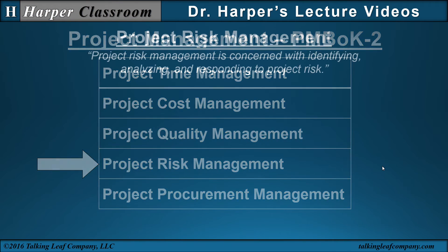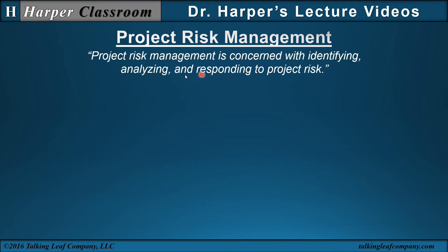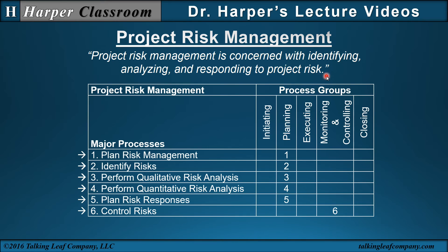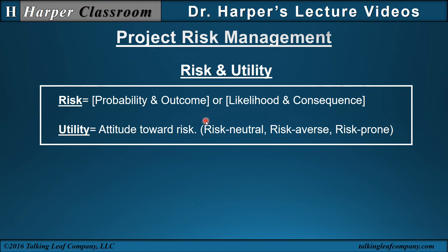The next knowledge area is project risk management — concerned with identifying, analyzing, and responding to project risk. There are six major processes. We first look at risk and utility, defining the difference: risk is the probability and outcome, or likelihood, or consequence. These two together determine a risk. You can have real risk, perceived risks, and utility of the risk — an attitude toward the risk. We'll look at three types of risk attitudes: risk neutral, risk averse (where they don't like the risk), and risk prone (where they see value in the risk). This utility can be applied to individuals, groups within a project, or stakeholders.